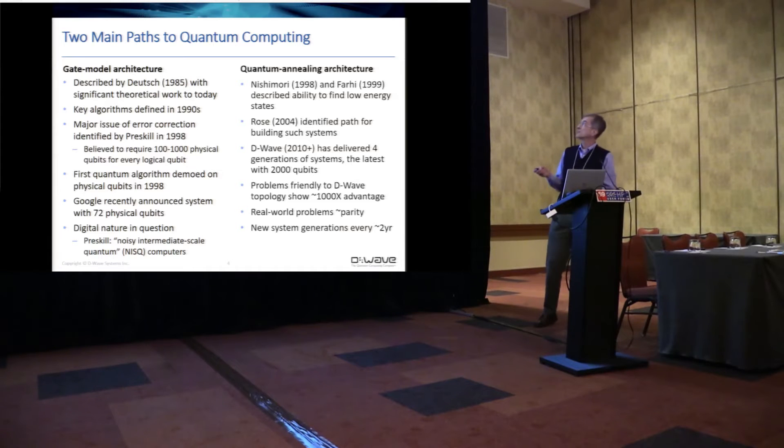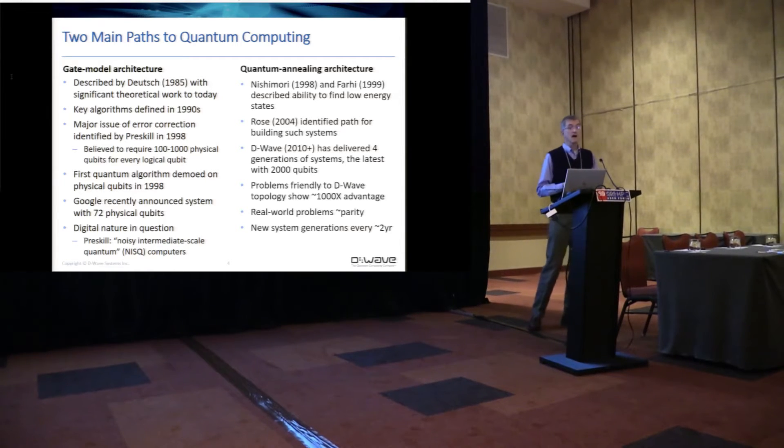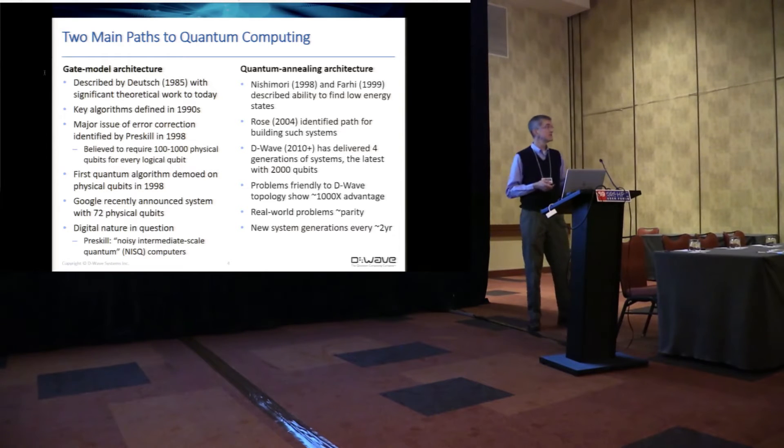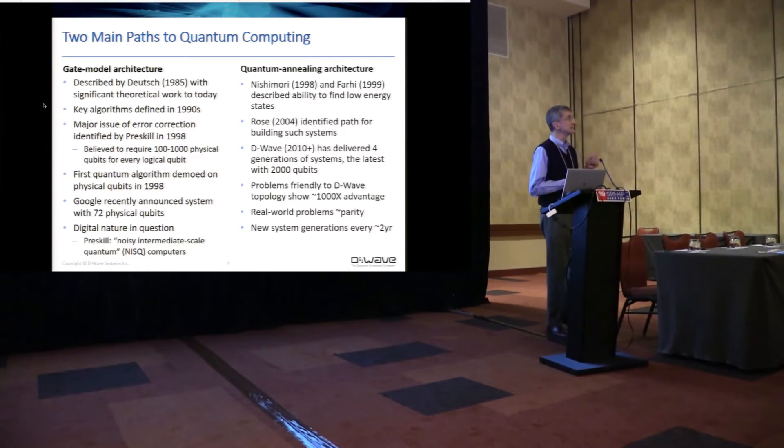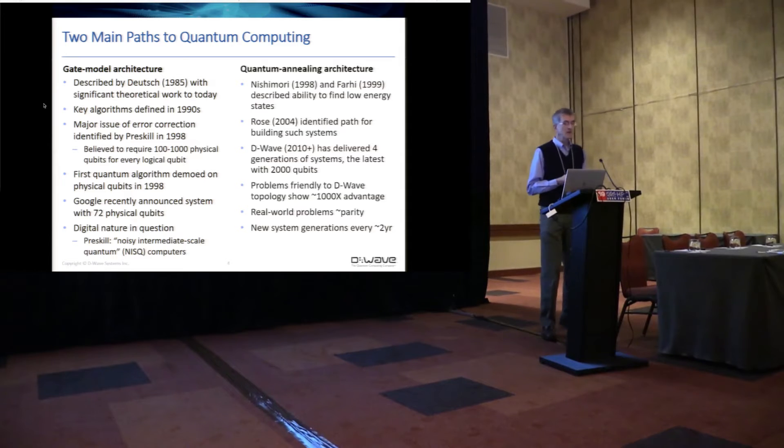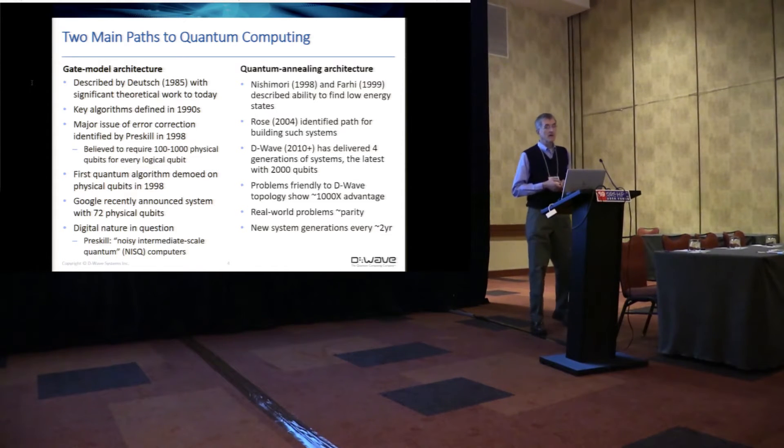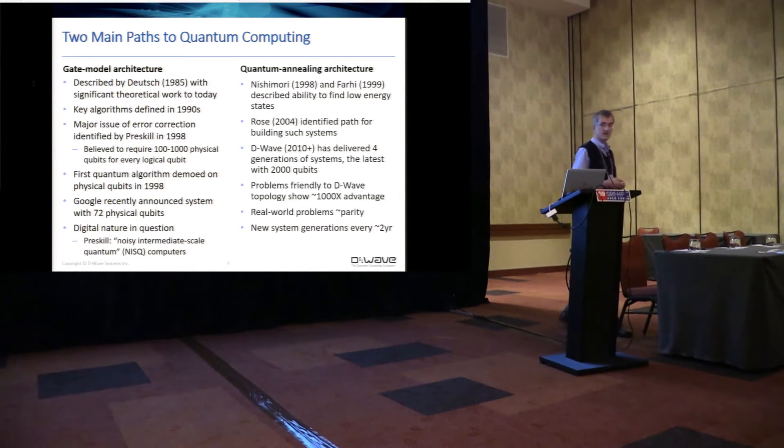Our systems, by contrast, are quite different. I refer to them as a quantum annealing architecture. Nishimori and Farhi both described attributes to this in the late 90s. Geordie Rose, who was one of D-Wave's founders, identified a path to building such systems in 2004. Since then, starting in 2010, we've delivered four generations of systems, the latest of which has 2,000 qubits. What we see there is that problems that are friendly to the D-Wave topology, some problems show a 1,000x performance advantage. In practice, real-world problems, I think of it as rough parity. New system generations coming out about every two years, roughly doubling the number of qubits. This is a significant pace we're on here.